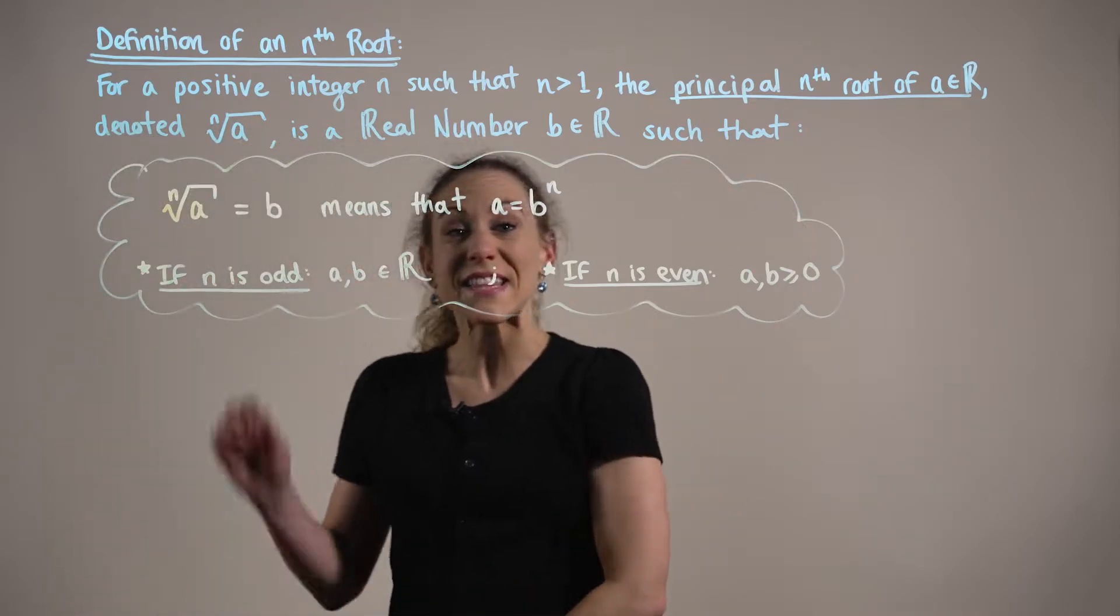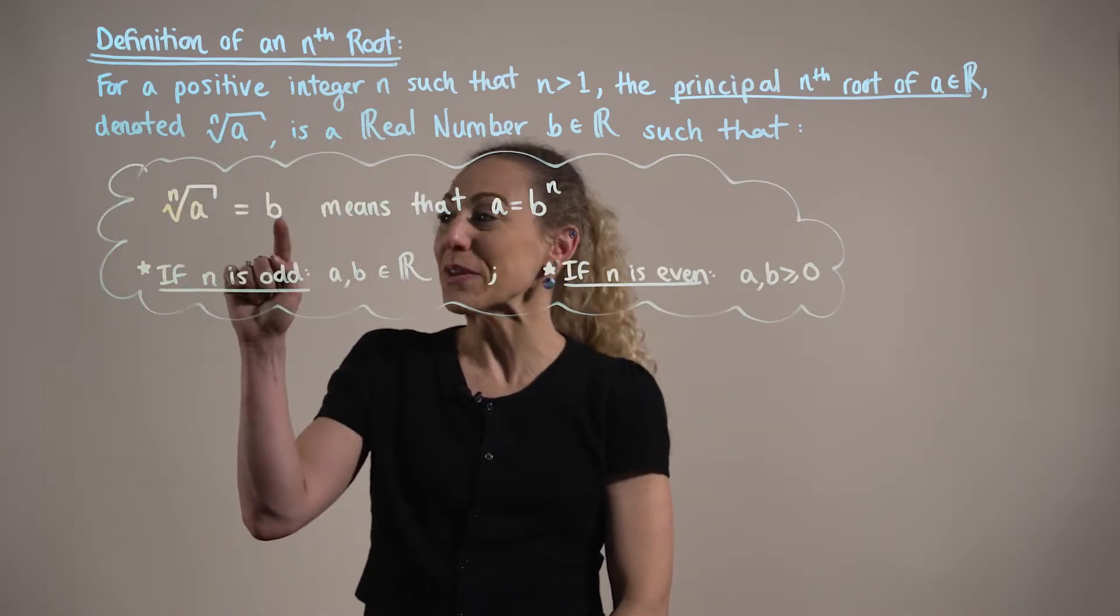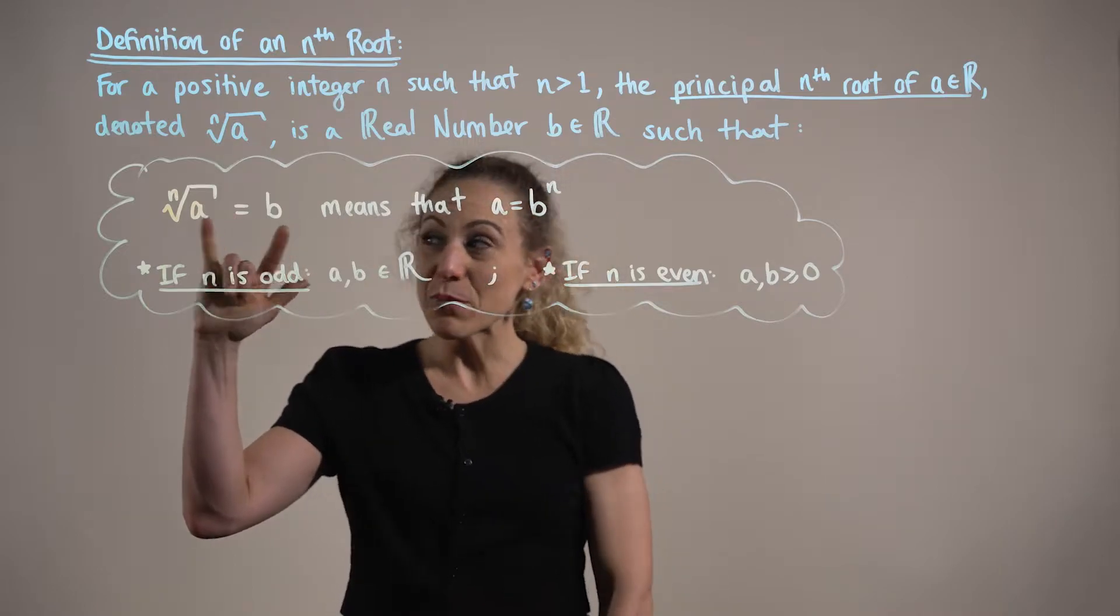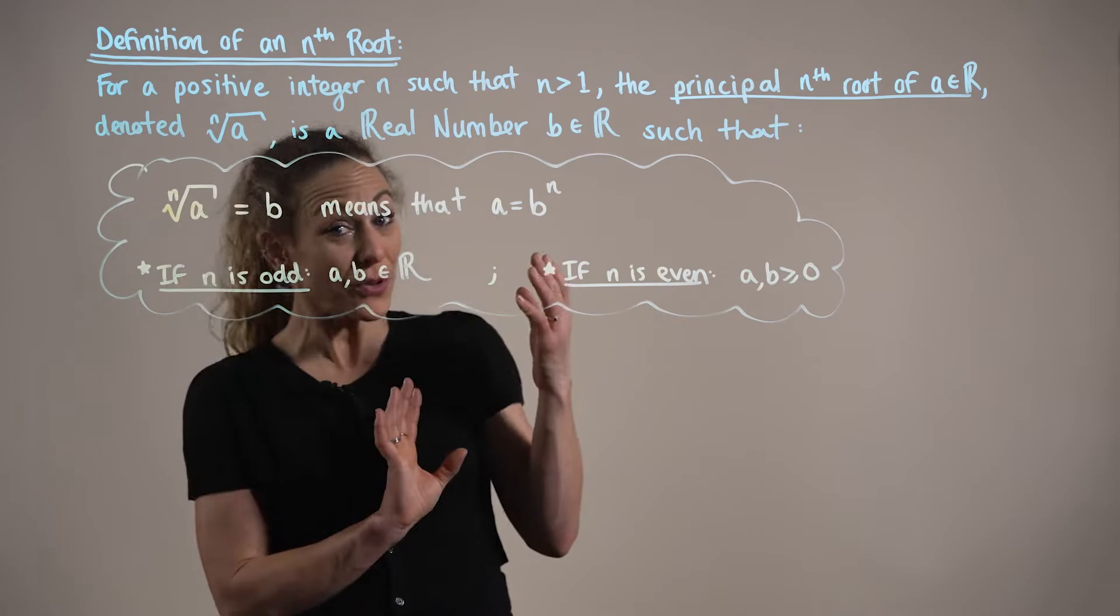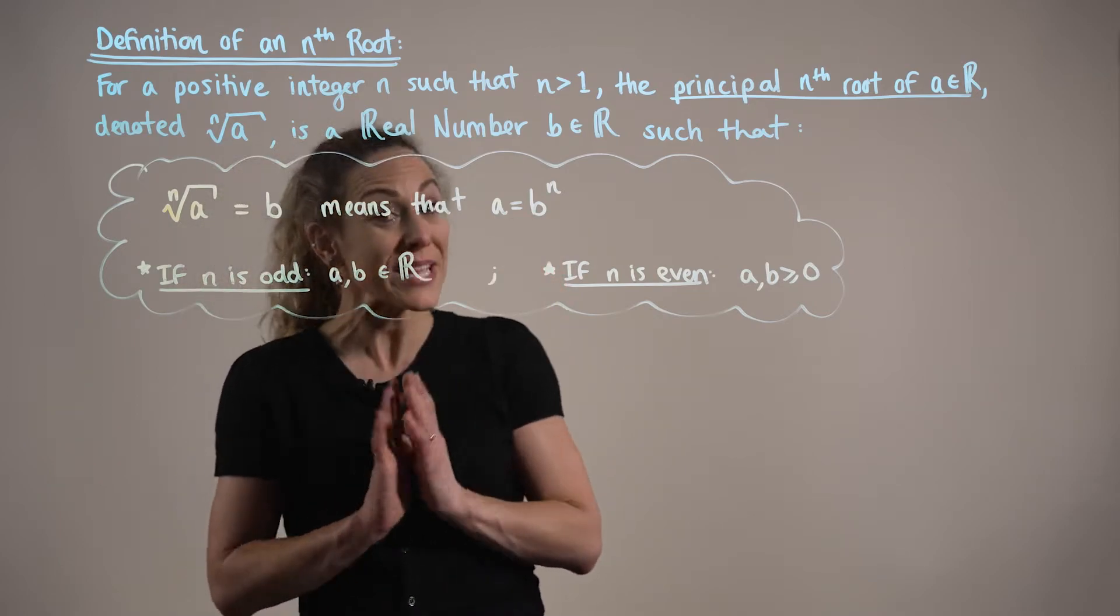So saying that the nth root of a is equal to a real number b means that if we raise both sides of this expression to the nth power, that we also should have a being equal to b to the nth power.